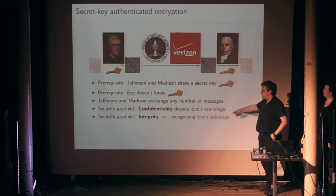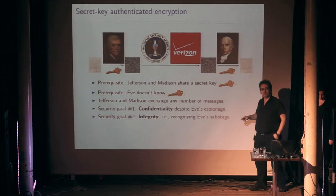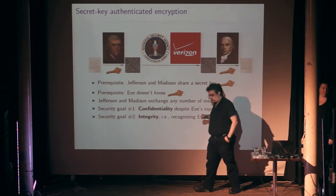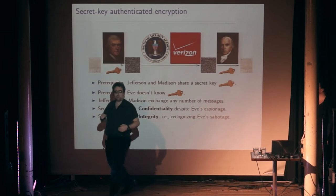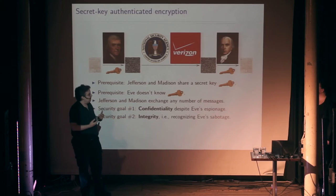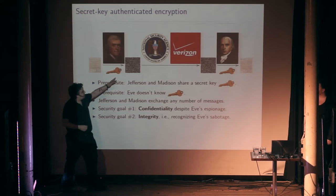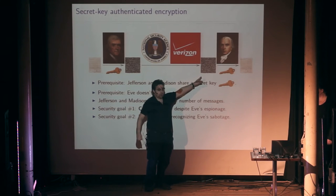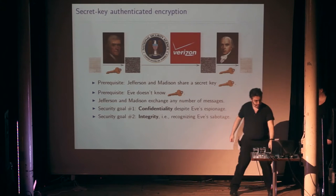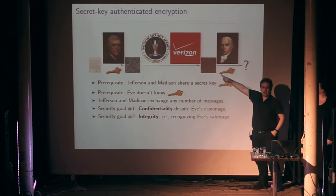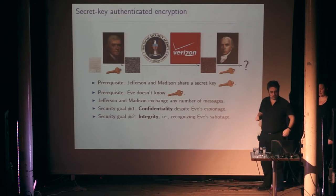There's also another goal, which is integrity. Suppose that NSA wants to change the message that Jefferson is sending to Madison — you can see how that could do quite a lot of damage if somebody is able to change the messages you're receiving. Integrity means that if the eavesdropper changes the message somehow, then the key is going to figure out that that wasn't the legitimate message, and Madison's going to see that it's not legitimate.